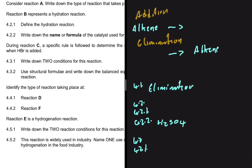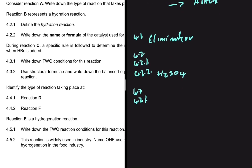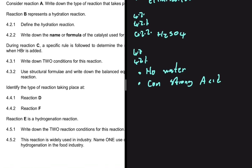The answer to 4.3.1 was difficult to find, but from the CAPS document and relevant resources, for hydrohalogenation we need no water — because alkenes cannot react with pure water — and we need a concentrated strong acid. So this is an addition reaction, namely hydrohalogenation: we're adding a hydrogen and a halogen.